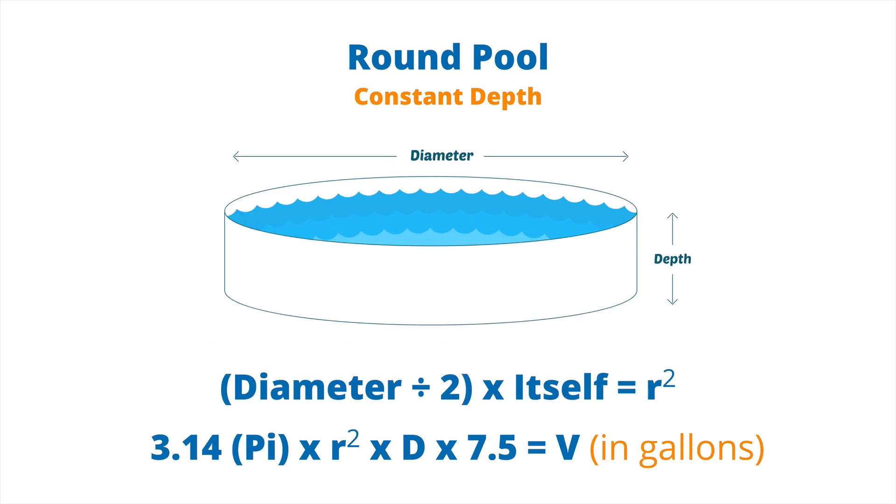Now moving on to round pools, which are commonly above ground pools with a constant depth. The only measurements you need to take are the diameter from the widest width and the depth. The diameter is really just the length of the pool itself. What we need to find is the radius squared. So we take the diameter and divide it by two, and then we multiply that result by itself. That'll give us radius squared.